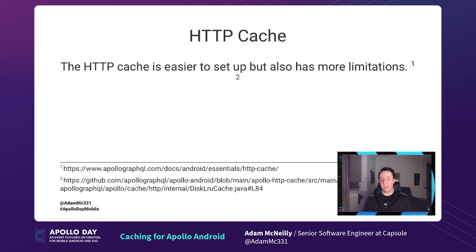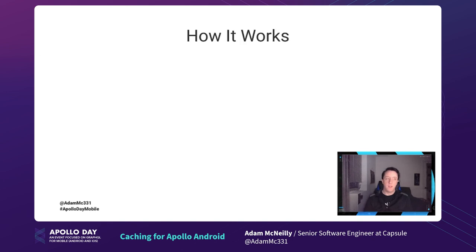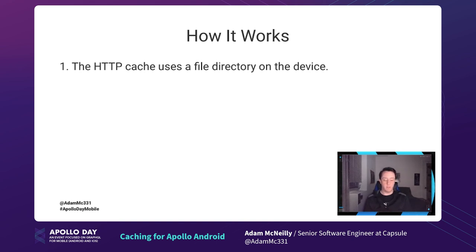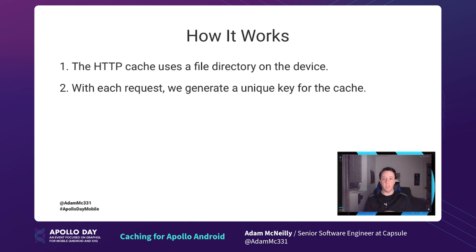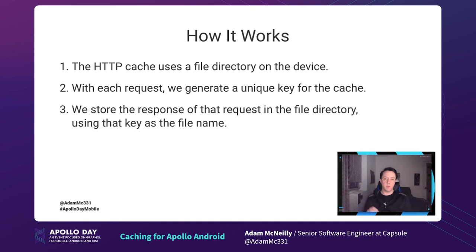The first one we're going to talk about is the HTTP cache — we'll talk about that because it's a lot easier to set up, although it does have more limitations. This HTTP cache was actually lifted from the OkHttp library, which Apollo is kind of built on top of. It works by using a file directory on the device. With each request, we generate a unique key for the cache based on the request we're trying to make. When we get the response, we store it inside the file directory using that key as the file name.